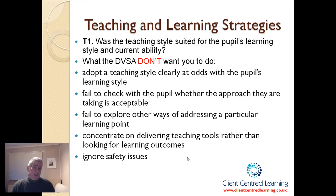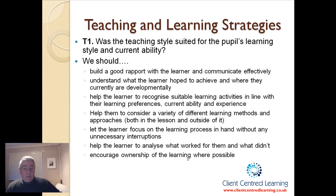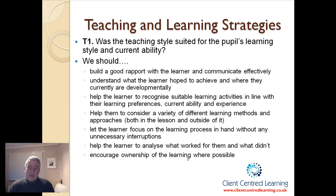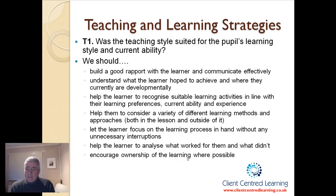They don't want you to ignore safety issues. Basically, what we should be trying to do is build a good rapport with the learner and communicate effectively. Make sure everybody's on side with everything that's being agreed and moving forward. Understand what it is that they want and where they currently are in their development. Help them recognise suitable learning activities in line with their learning preferences, their current ability, their experience. As part of the GROW process — goal, reality, options, way forward — if they're choosing things that might compromise safety, we need to jump in and say: hang on, what about this? Have you considered this? And you're doing it in a way that helps them consider a variety of different ways of doing it, because there is more than one way to do everything.